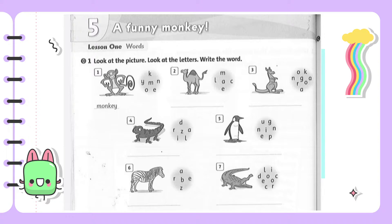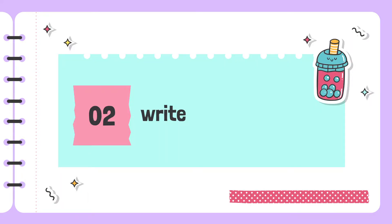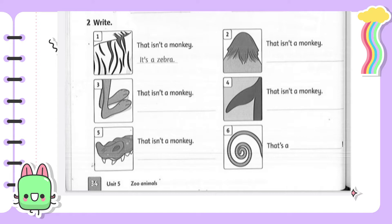Look at picture two — camel. Picture three — kangaroo. Picture four — lizard. Picture five — penguin. Picture six — zebra. And the last picture, number seven — crocodile. Now continue to exercise two: write. Look at exercise two — you can see six pictures and you write a sentence about the animal in each picture.